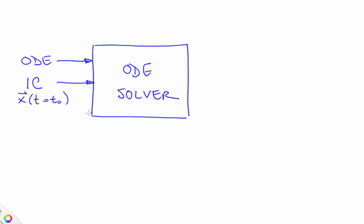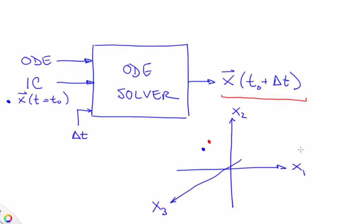It takes an ODE, an initial condition, and a time step delta t, and it gives you back an estimate of what the state will be at t0 plus delta t. In the state space, you can interpret that in this way: that the ODE solver is taking the blue point, the x of t equals t0, and figuring out what the next point will be.